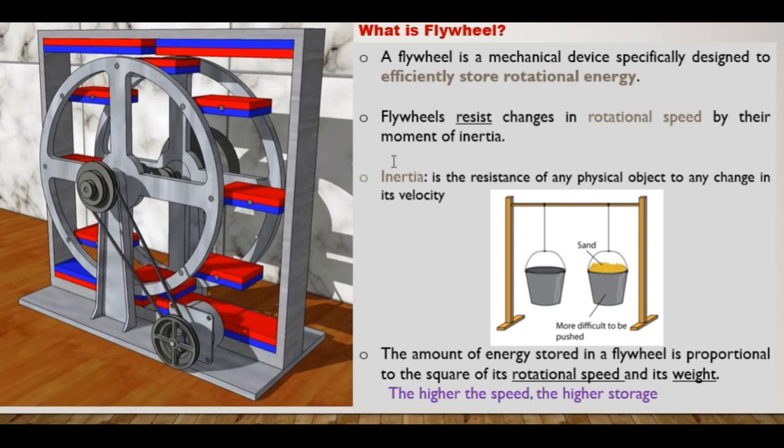A flywheel resists changes in rotational speed by their moment of inertia. For instance, if a flywheel is rotating clockwise at a certain speed and you want to turn it anti-clockwise, you're going to have very big resistance.